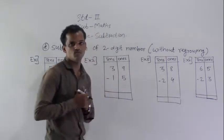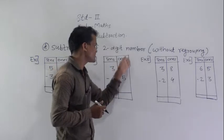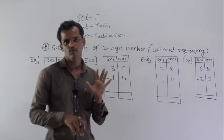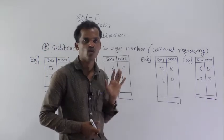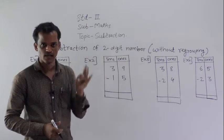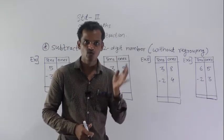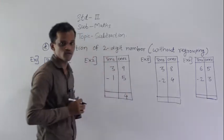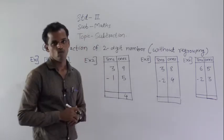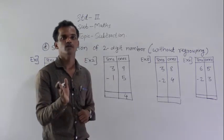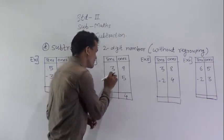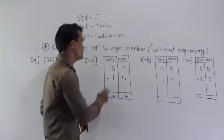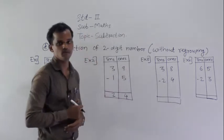Next example: 39 minus 15. Always start from the ones place. 9 minus 5 — count 5 fingers backward from 9. Before 9: 8, 7, 6, 5, 4. So 9 minus 5 equals 4. Then the tens place: 3 minus 1. Before 3: 2. So 3 minus 1 equals 2. Therefore, 24 is the difference between 39 and 15.